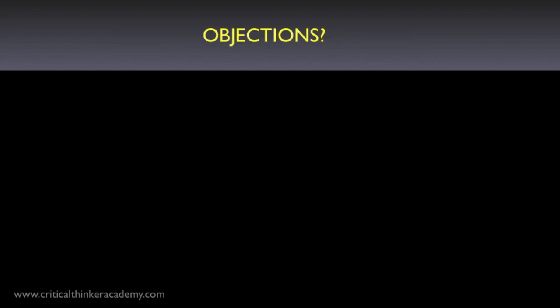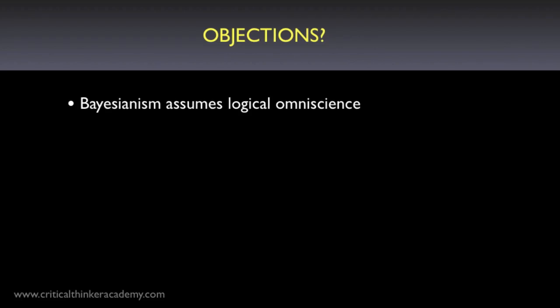We've been looking at objections to all the previous interpretations of probability, so it's only fair to mention that there are objections to the kind of subjective Bayesianism I've been describing. First objection: Bayesianism assumes logical omniscience. The claim is that if our beliefs satisfy the basic rules of probability, then the rules require that all beliefs about logical truths have probability one, and beliefs about logical contradictions have probability zero. So if our beliefs are coherent, we can never believe a contradiction. The objection is that this is just false of human beings — none of us are logically omniscient in this way, and so it's an unreasonable standard to impose on our beliefs.